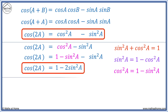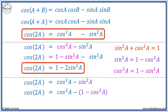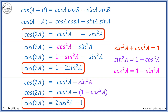We can also substitute sin²(a) with 1 minus cos²(a) to get cos²(a) minus (1 minus cos²(a)), which simplifies to 2·cos²(a) minus 1. These are the three variations of the cosine double angle formulae.